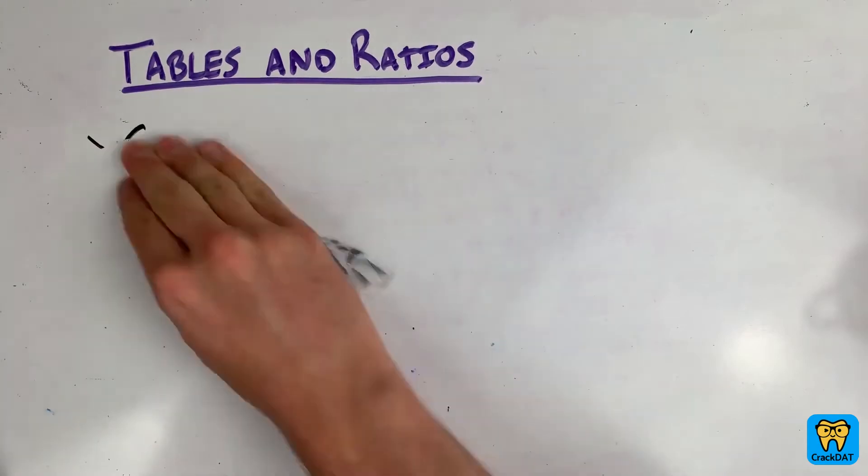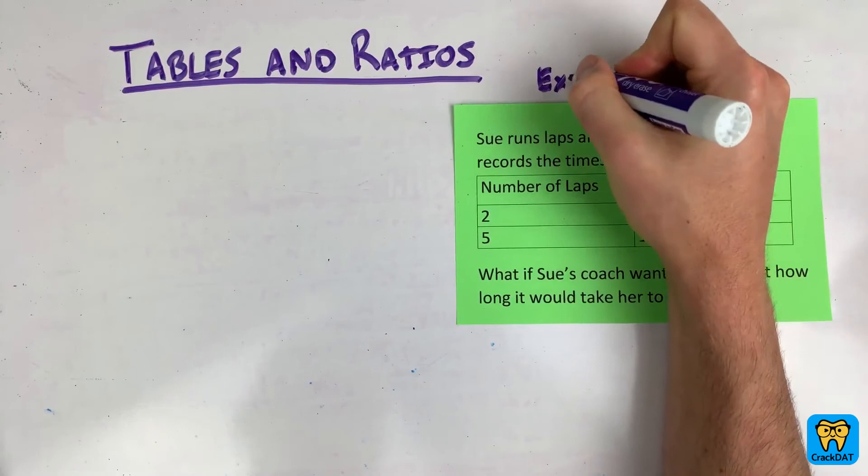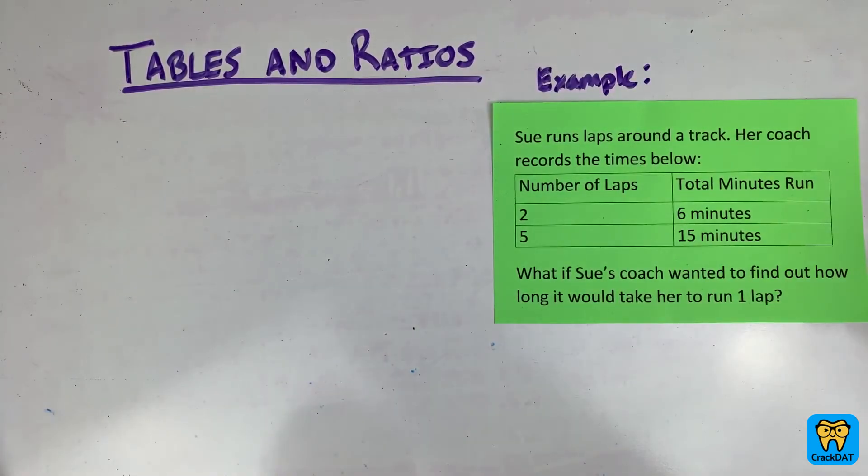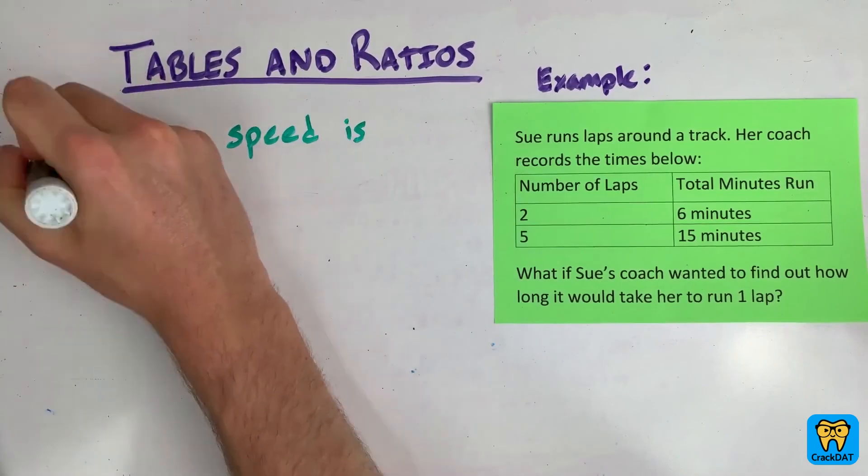So for example, suppose Sue runs laps around a track while her coach records her number of laps and times in the table below. What if Sue's coach wanted to know how long it would take Sue to run one lap? Assuming her speed remains constant, we already know how to find the unit rate.